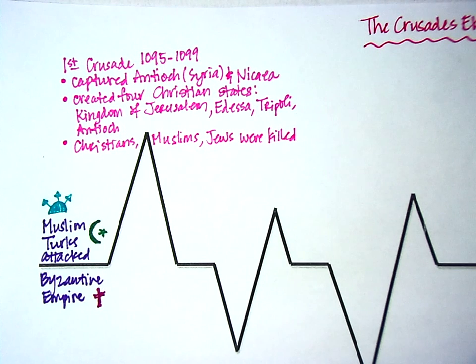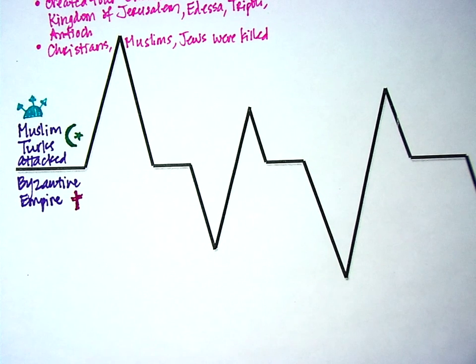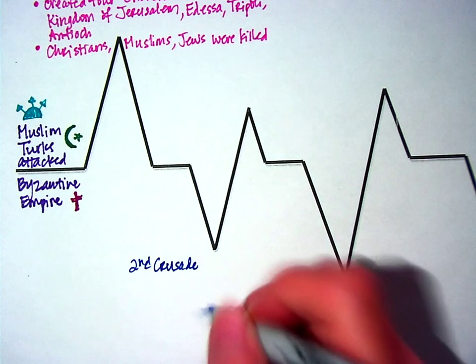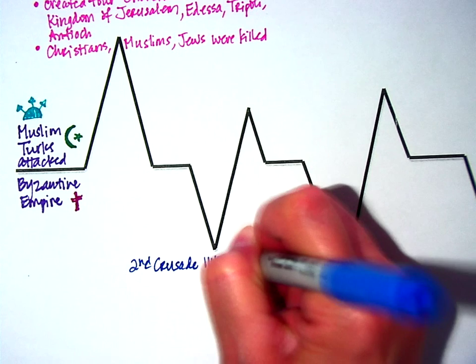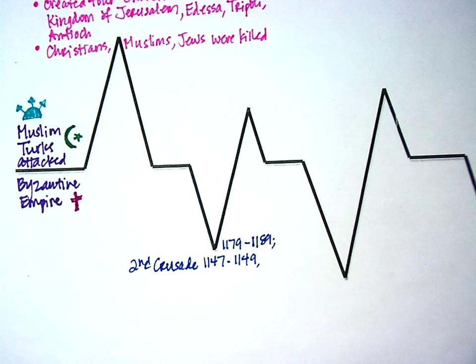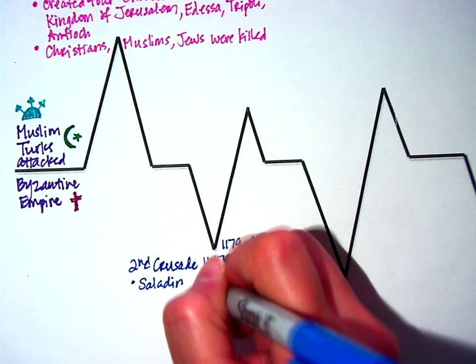The First Crusade was a total victory for the Christians — in fact it's the highest peak on your timeline, indicating the largest victory. Now looking at the Second Crusade, you can see something bad happens because it's going down. The Second Crusade has several dates because they fought, took a break, and fought again: 1147 to 1149, and then 1179 to 1189. The turning point for the Christians was when Saladin became commander of the Egyptian army, because Saladin was a ruthless and very strategic leader.